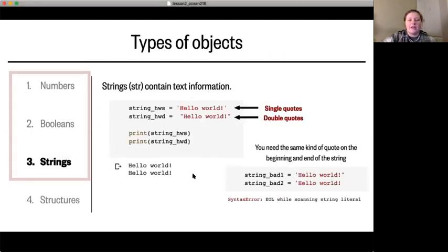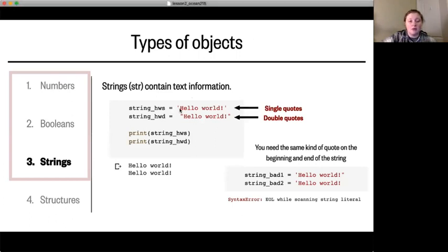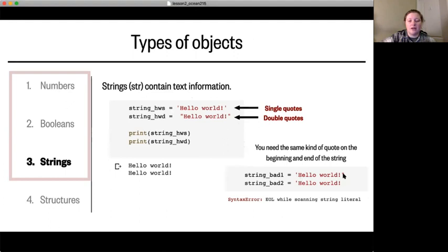A string is an object that contains text information. You can create them using single quotes shown here or double quotes shown here. You just need a beginning and an end quote. You do need the same kind of quote on the beginning and the end. Notice here that if you try to create a string starting with a single quote and ending with a double quote, you end up with a syntax error.